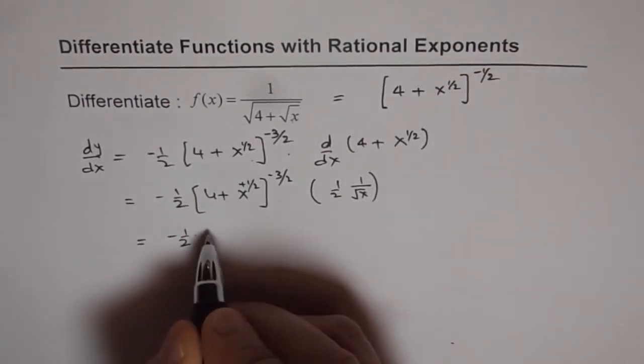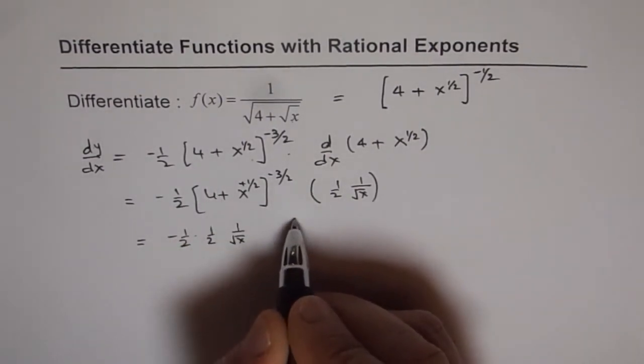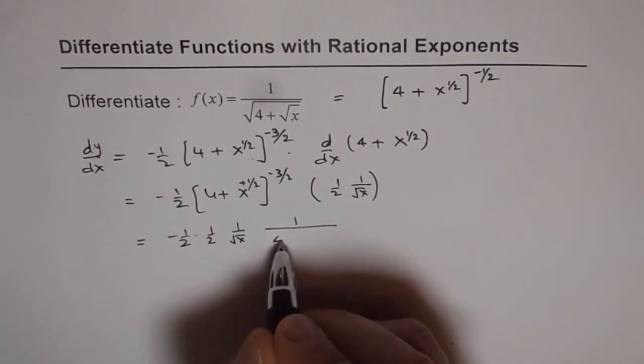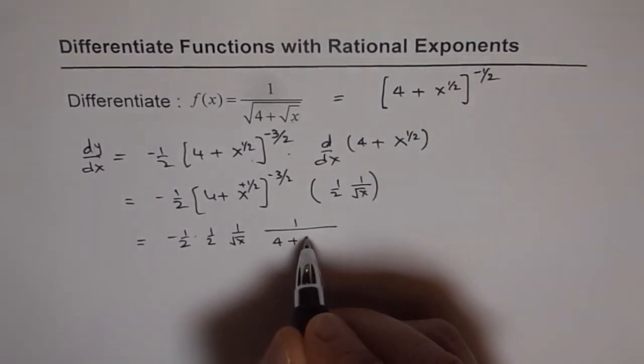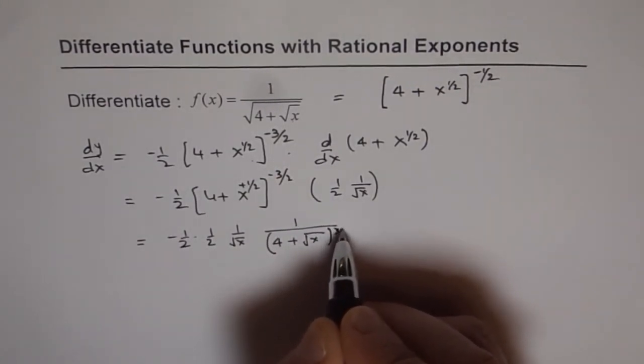So let me write this also together, half. And then we have 1 over square root of x and this is 1 over 4 plus square root of x to the power of 3 over 2.